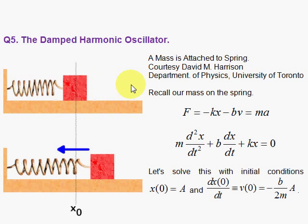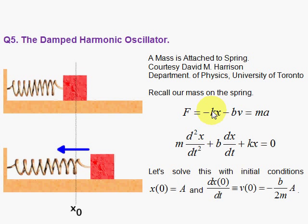If I stretch the spring by pulling the mass to the right a distance x, then k is the constant with the minus sign in front, and k is positive, so the force will be to the left. If you compress the spring by making x negative, pushing in like this, then a negative x with this minus sign will give you a positive force pushing you to the right. k is called the spring constant, and here we have added a frictional force — the second term — and the frictional force is taken in this ideal model to be proportional to the velocity. b is a positive value, and the velocity can be positive or negative.